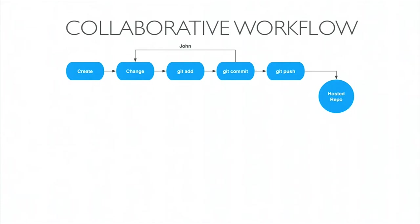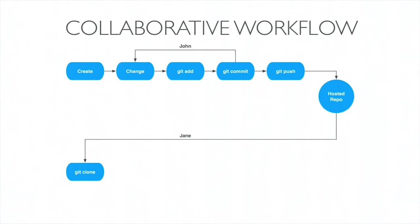You push that up to some kind of shared centralized place. This is not to be confused with a centralized version control server, because each version of your repository is distributed. What John has is an exact copy of what's in the hosted server. This is something you'll hear a lot — pushing upstream and pulling downstream. Upstream is away from you; if you push to a hosted server that's upstream. If you do a pull, you're pulling it downstream.